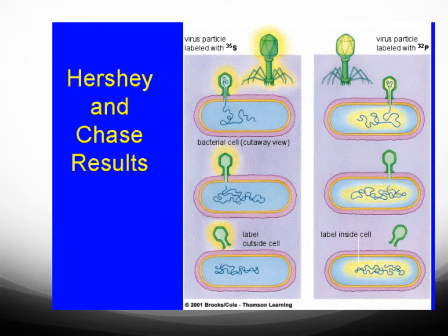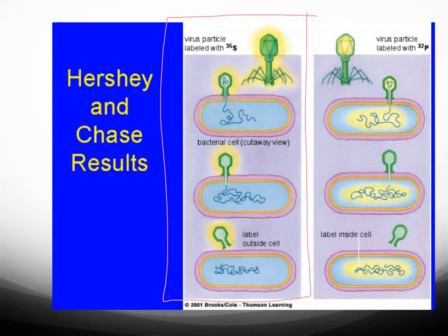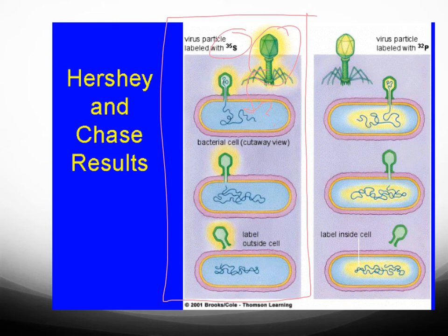The Hershey and Chase experiment is probably one of the hardest experiments for students to understand. Let's start with the sulfur side. The outer structural support of the virus is made up of proteins, and we already know we can label proteins with S35. Viruses work by putting something into your cell — at the time it was unknown what that something was — and that instructs the cell to make more viral particles. The question was: what is transforming this cell into a viral-making machine?